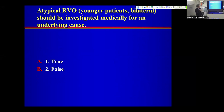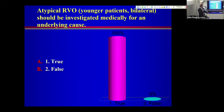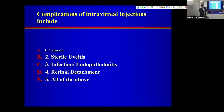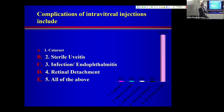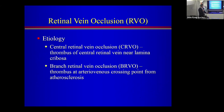Atypical retinal vein occlusion — younger patients or bilateral retinal vein occlusions — should be investigated medically for an underlying cause, true or false? 100% true; the audience is very convinced. Last question: complications of intravitreal injections. The audience is pretty concurrent. Let's start the talk and see what we can find out.